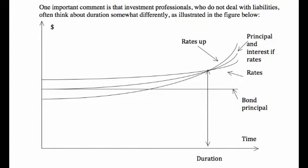One important comment: investment professionals who don't deal with liabilities think about duration in the context of holding a bond. Imagine a bond issued at par — the coupon equals the market interest rate — at time zero. On the time axis, you see the point labeled duration, and then further along is where the bond principal line ends — that's the maturity of the bond. All curves end at that maturity time.